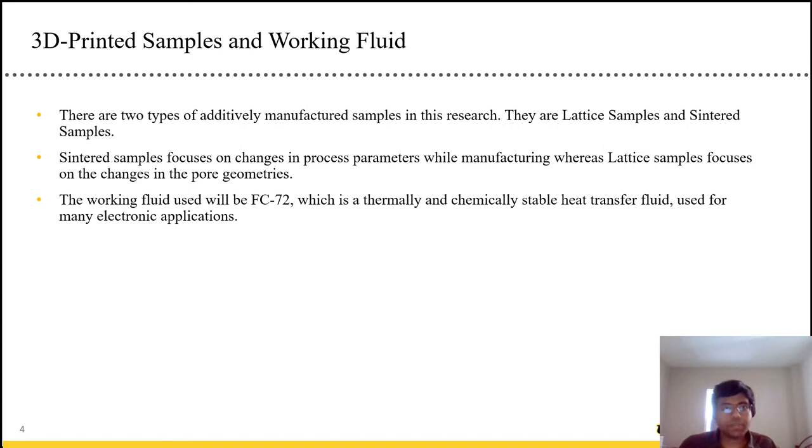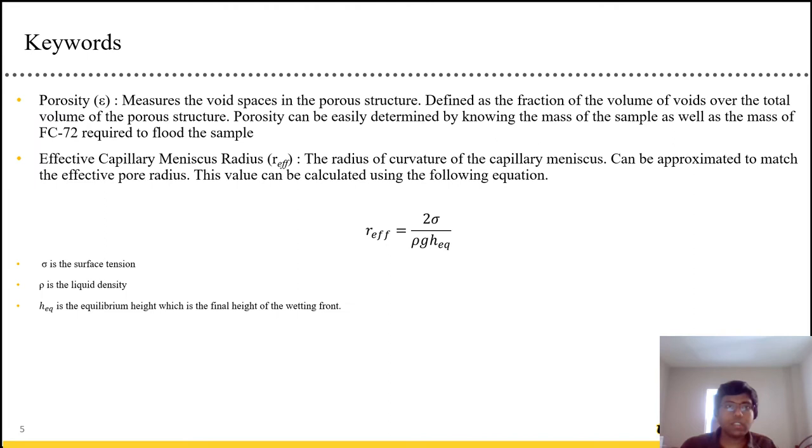The 3D printed samples, basically there's two types that we're going to use. They are the lattice samples and the sintered samples. The sintered samples basically focus on the change in process parameters, whereas the lattice samples focus on the change in the pore geometries. And the working fluid that we're going to use is FC-72 fluid, which is basically a heat transfer fluid, which is very thermally and chemically stable fluid used in many electronic applications.